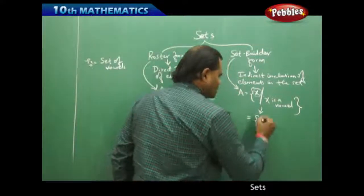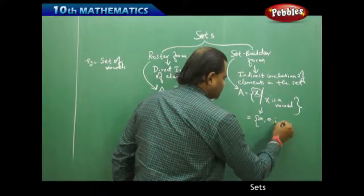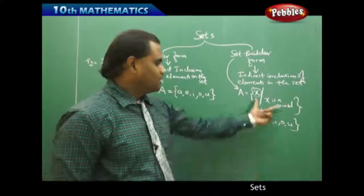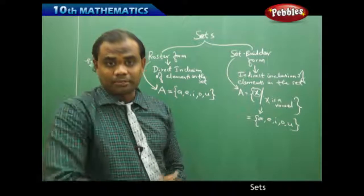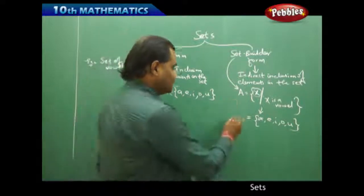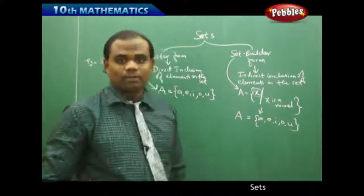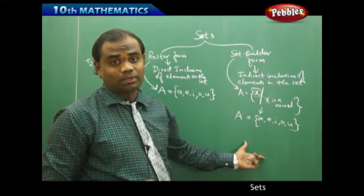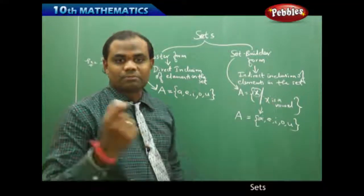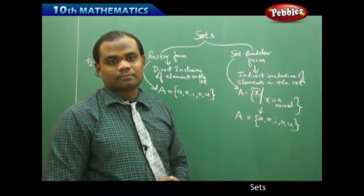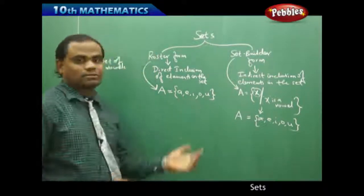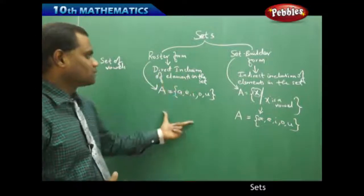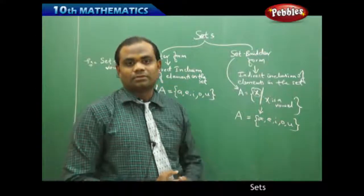Set A contains all elements X such that the condition is that X is a vowel. That means I get all vowels in the set — that is the minimum information given by the set builder form. From this, I can build the elements: A, E, I, O, U. So indirectly, the set builder form derives the roster form from its minimum information. The direct listing {A, E, I, O, U} is the roster form.